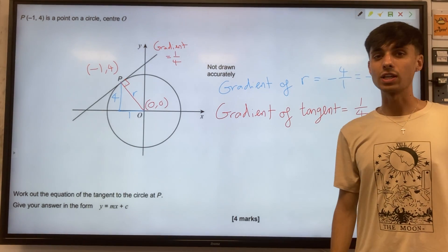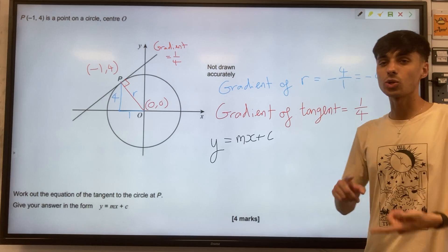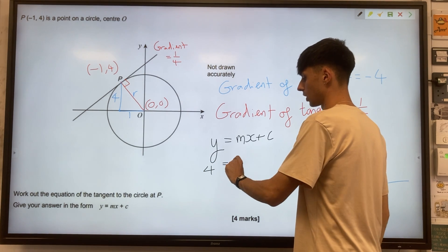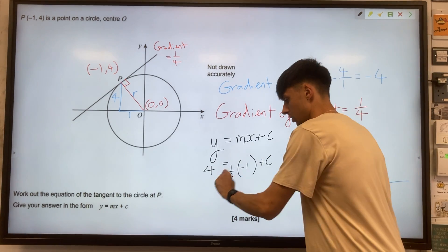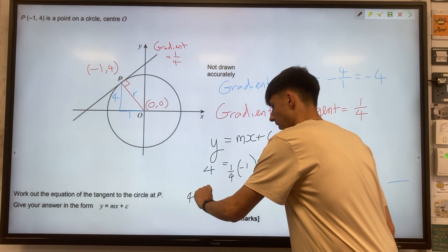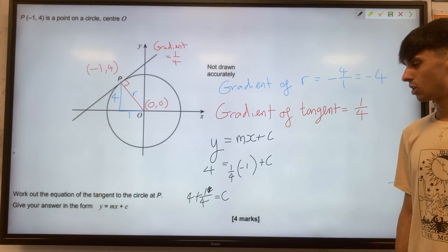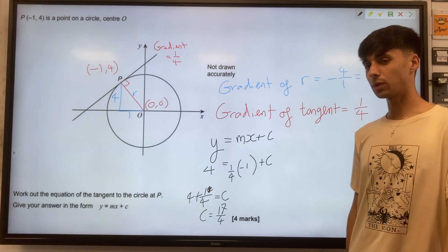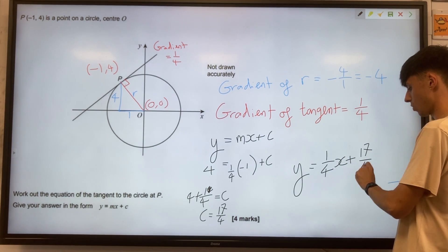So our last part of this question is finding, using y equals mx plus c, the equation of this line. So let's sub in our x, our y and our m. So we've got 4 equals 1 quarter times minus 1, plus c. So we're going to have 4 equals minus a quarter plus c. Let's move this minus a quarter over to the other side. So we'll have 4 plus a quarter equals c. So that's 17 over 4 we've got there. So c will be 17 over 4. And lastly, writing out the equation of our tangent with this c, we'll have y equals quarter x plus 17 over 4.